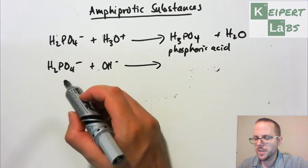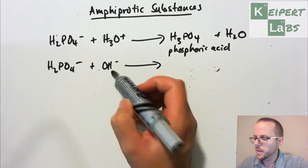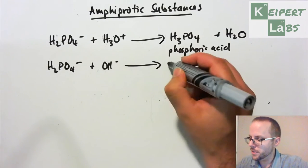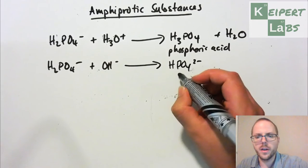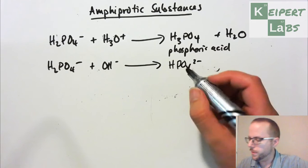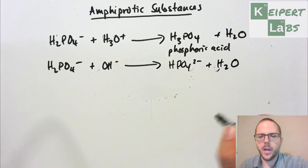In this situation it's acting as an acid. It's donating one of its protons to the hydroxide ion. So we're taking, we're adding another negative charge. So it's HPO4 and it's 2-. So this is known as the hydrogen phosphate ion, sometimes also known as phosphate, again in an old fashioned way, and water.